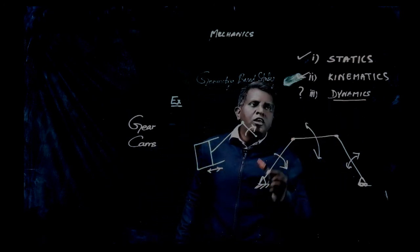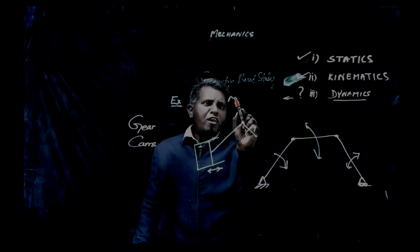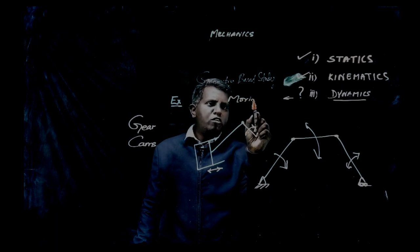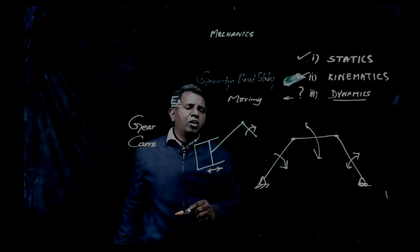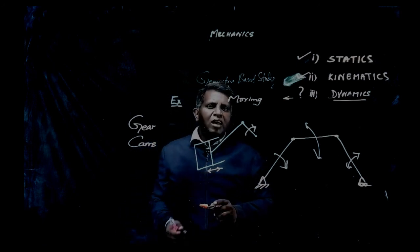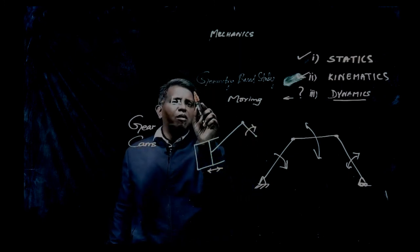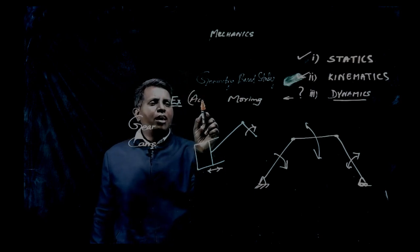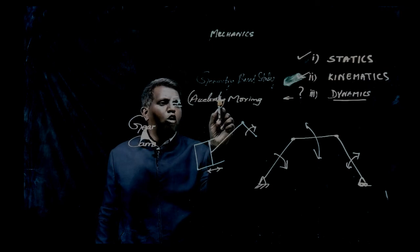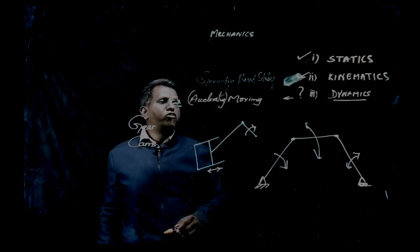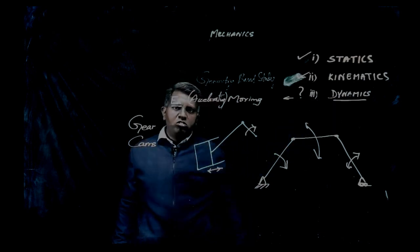Here in dynamics, you may think like object is moving, object is moving. So the moving object is not something same as the uniformly moving object. Instead of writing it as a moving object, we can write it as an accelerating object instead of moving. Then, such problems can be studied in dynamics. Thank you.